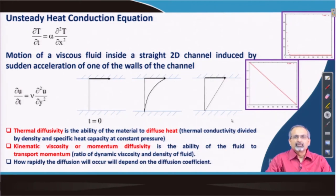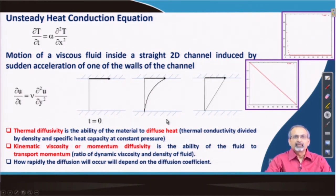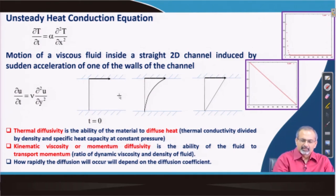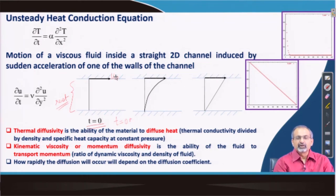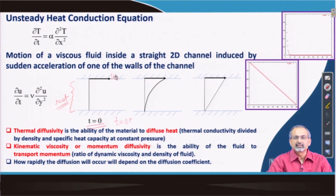This problem can also be looked at from a fluid dynamic perspective. We have two parallel flat plates with an incompressible viscous fluid confined within the gap between them. Initially the fluid is at rest; at t equal to 0 the fluid is at rest, and then at t equal to 0 plus we make one of the plates move — here the upper plate is shown moving to the right — and we try to find out how the fluid is set into motion by the movement of the upper plate, given that this is a viscous fluid.